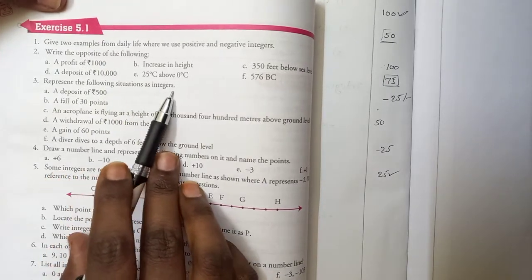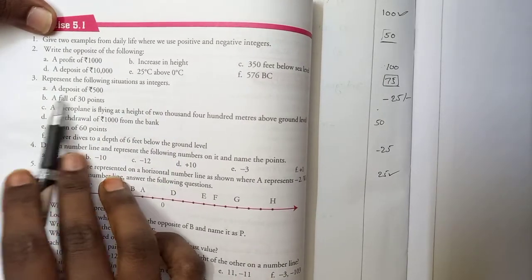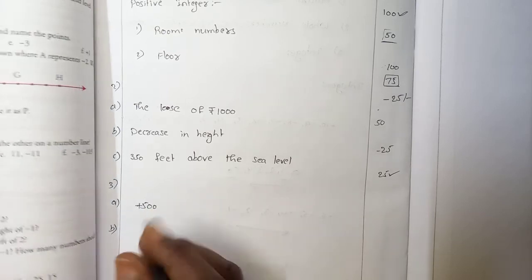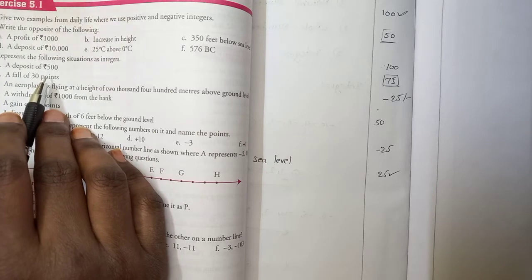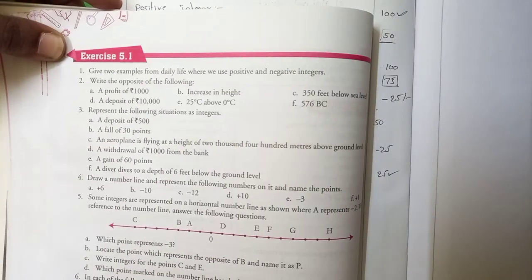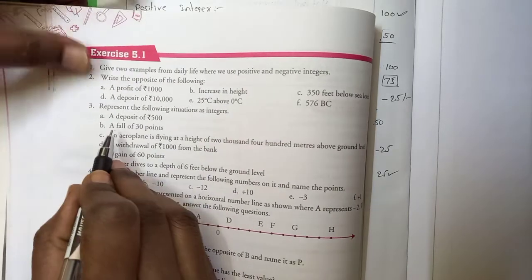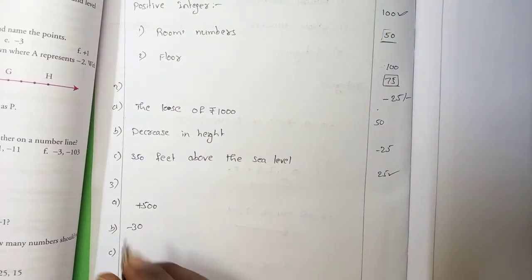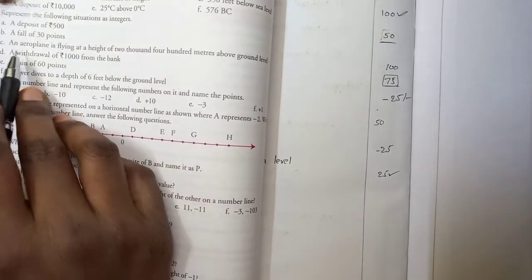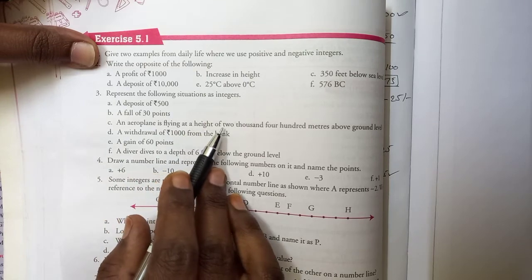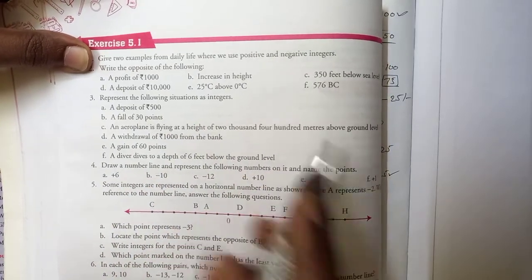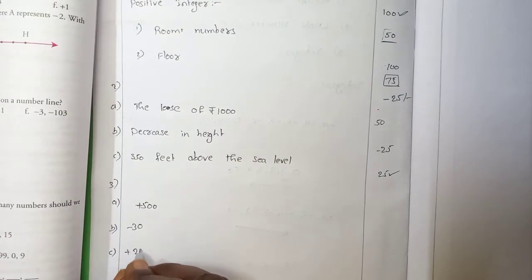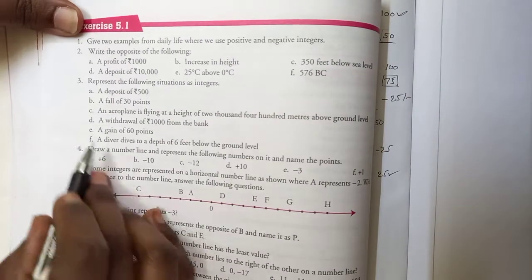Move to the third one: represent the following situations as integers. A deposit of 500 — deposit means adding, so it will be plus 500. Based on the situation you have to write either plus or minus before the number. A fall of 30 points means they lost 30 points, so it is minus 30. An airplane is flying at a height of 2400 meters above the ground level — that means plus 2400. Write for the remaining three also.